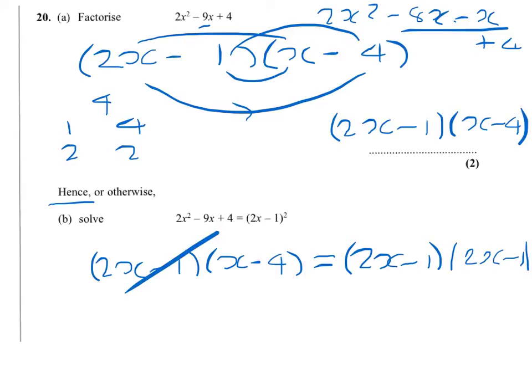So we can cancel off the 2x minus 1, and we have x minus 4 equals 2x minus 1.